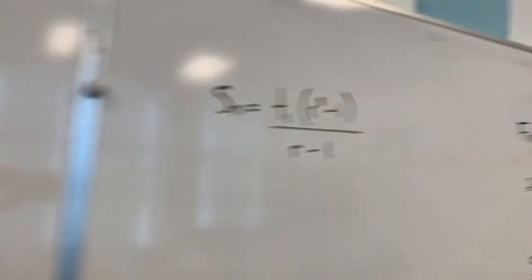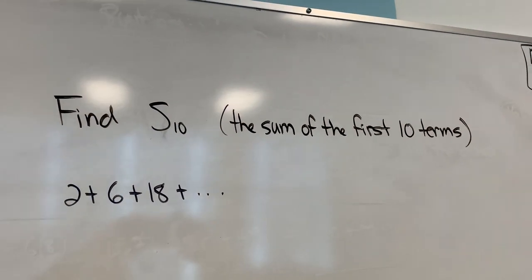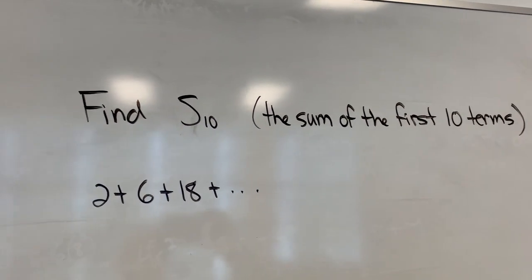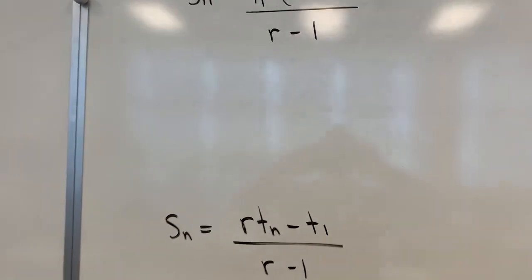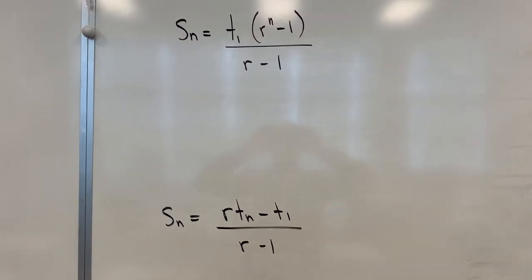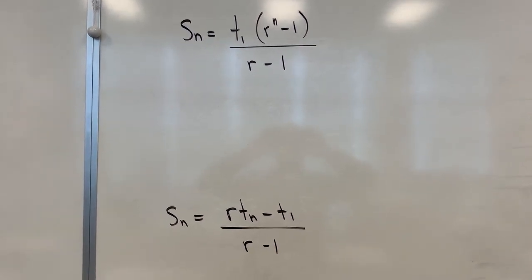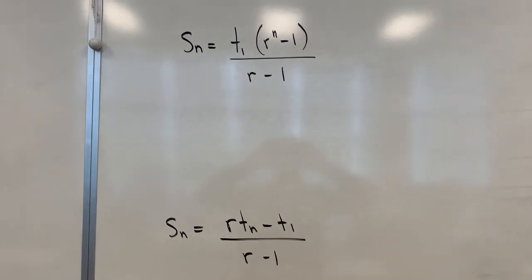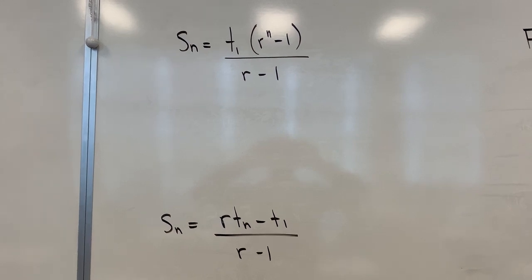If we are asked to find sums, for example, find S10, the sum of the first 10 terms in that first geometric series, we have some choices. Our formula sheet has these two formulas here: Sn equals T1 times R to the N minus 1 over R minus 1, and Sn equals RTN minus T1 over R minus 1. You don't need to memorize them. You have them on the sheet. But it is important to decide which one makes more sense to use.